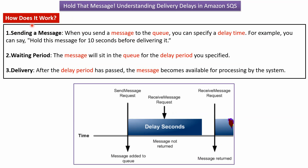Now we will see how delivery delay works. Step one is sending a message. When you send a message to the queue, you can specify the delay time. For example, you can say hold this message for 10 seconds before delivering it.